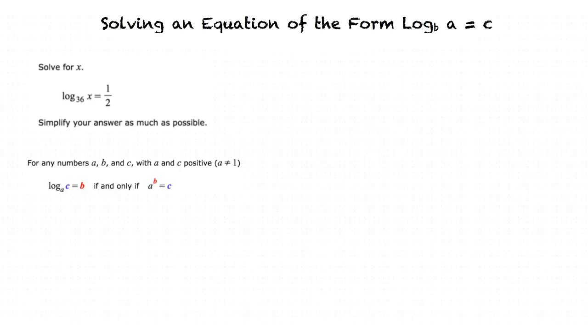For this problem, we can start off by applying the given relationship to the equation log base 36 of x is equal to 1 half. In this example, our a value is equal to 36, our b value is equal to 1 half, and our c value is equal to x, where x is the value we are attempting to solve for.